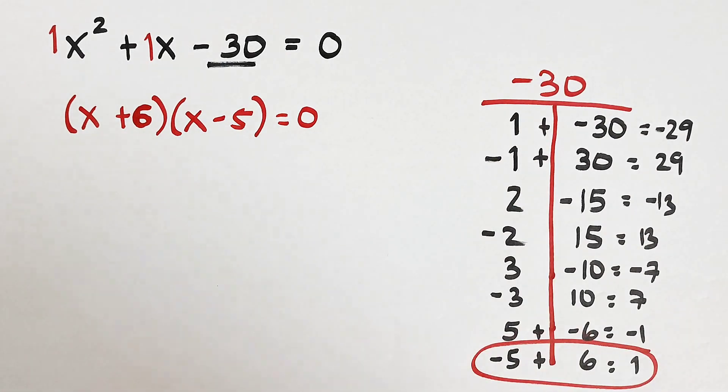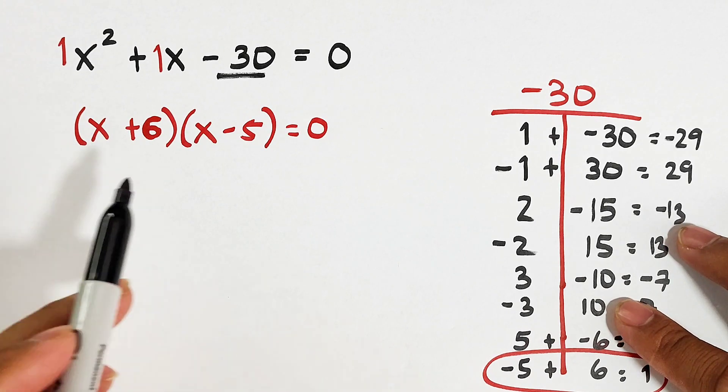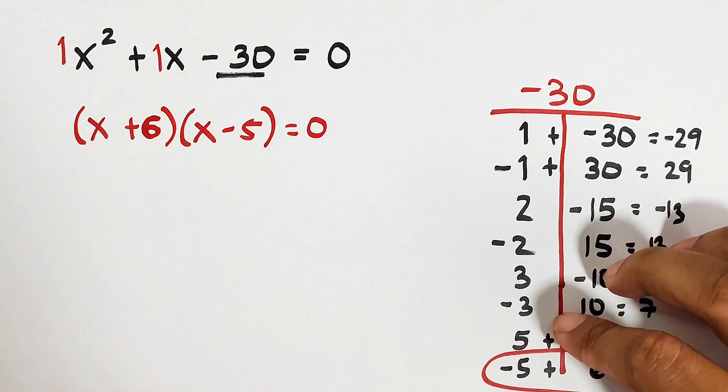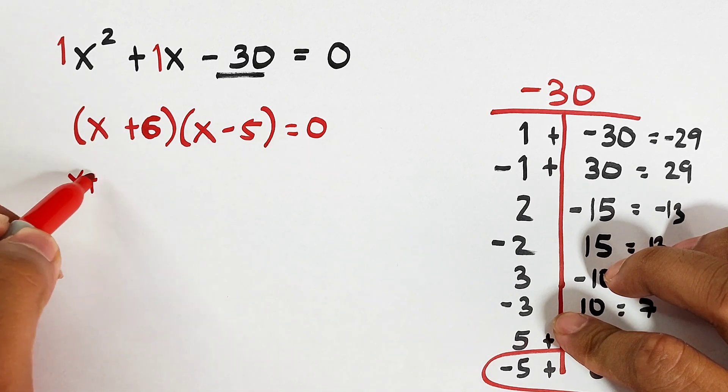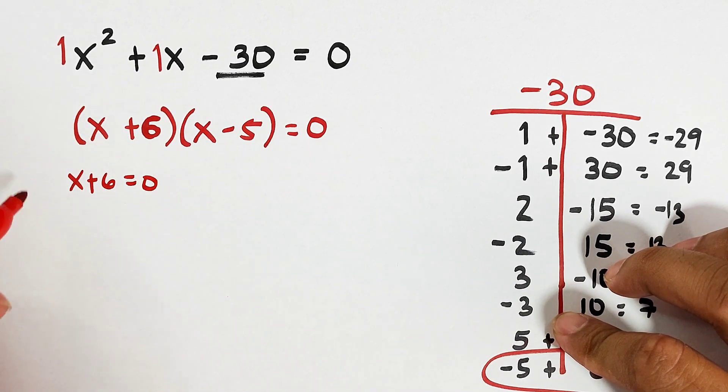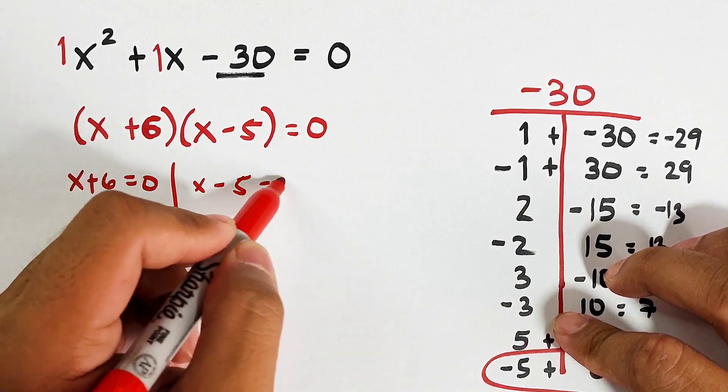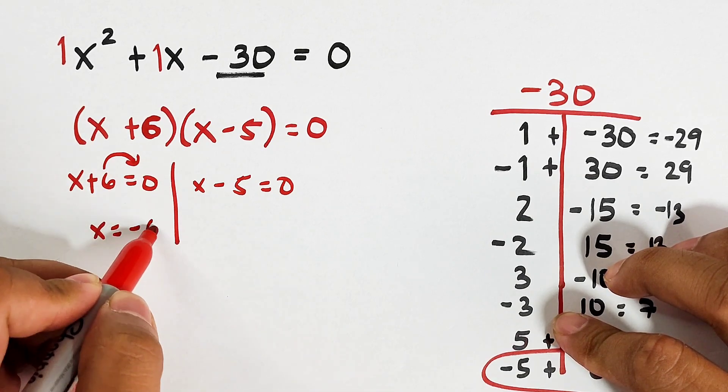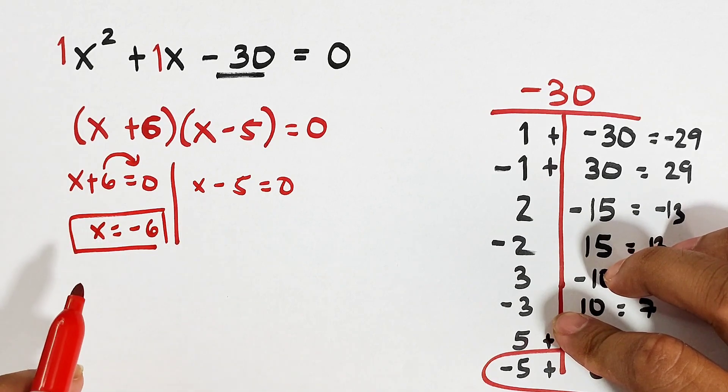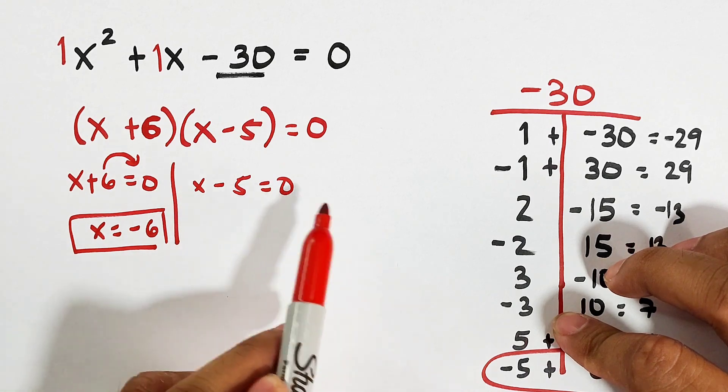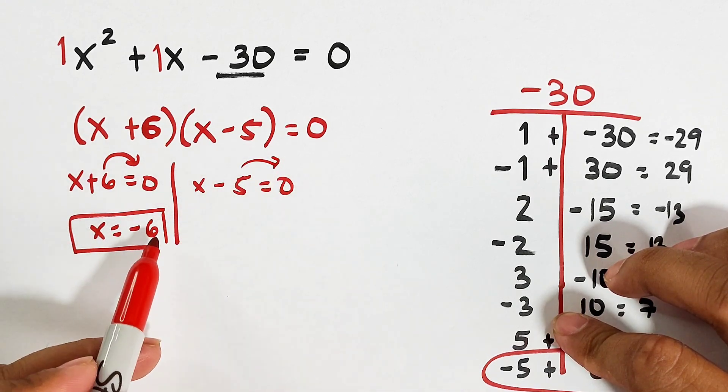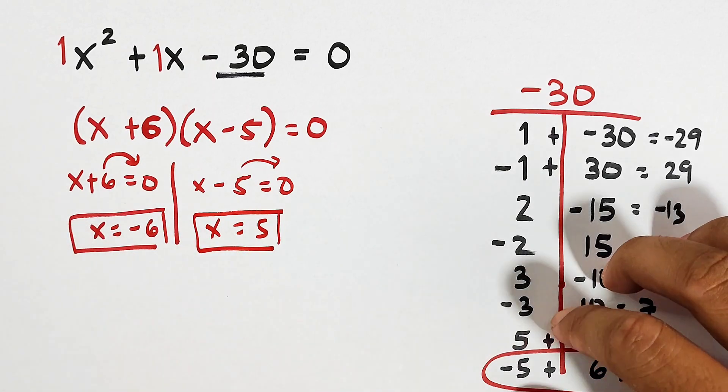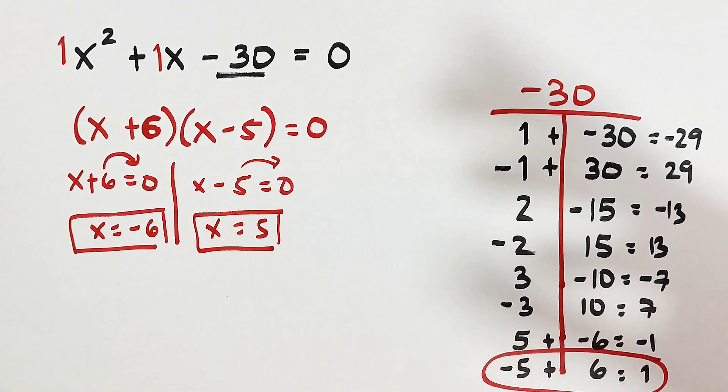So again, let's continue solving this problem or this equation. So what we have now is x plus 6 times x minus 5 is equal to 0. So how do we solve this equation? What we need to do is to equate each factor by 0. We have x plus 6 is equal to 0. Then the other one is x minus 5 is equal to 0. What we need to do is transpose this to the other side. From positive 6, it will become negative 6. Meaning, the first solution or the first value of x is negative 6. What about the other? x minus 5 is equal to 0. Transpose this to the other side. This is x is equal to, from negative, it will become positive. So this is 5. So the solutions are negative 6 and 5 for this problem.